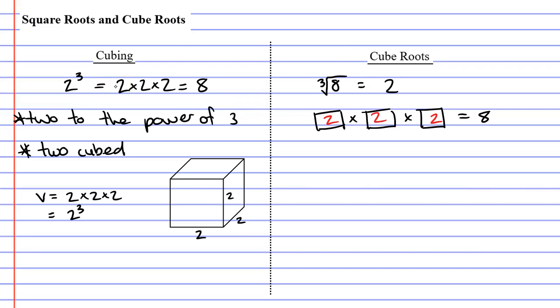Once again, we learned that cubing will take you from 2 to 8, whereas cube rooting will take you in reverse. It will take you from the 8 back to the 2.